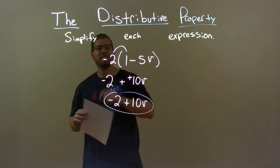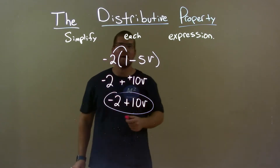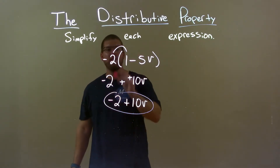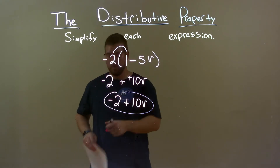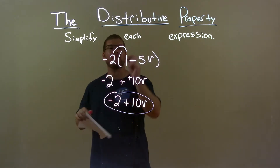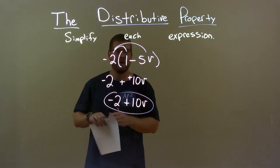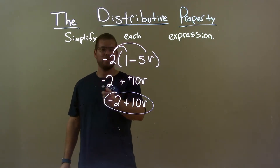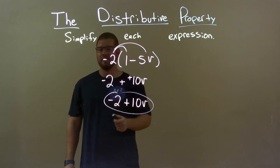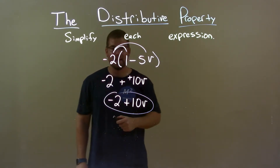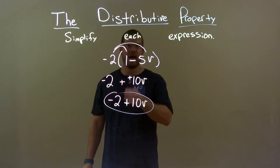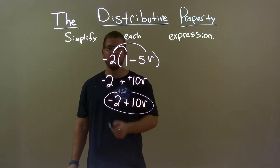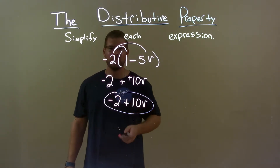Let's do a quick recap. We're given negative 2 times 1 minus 5v and we need to simplify. First, I distributed the negative 2 to both parts — be careful there. That ended up with negative 2 minus a negative 10v. Well, subtracting a negative is the same thing as adding a positive, so my final answer is negative 2 plus 10v.